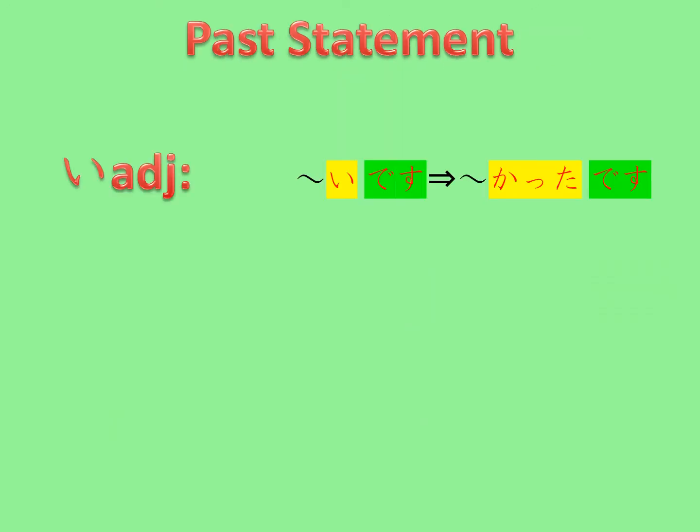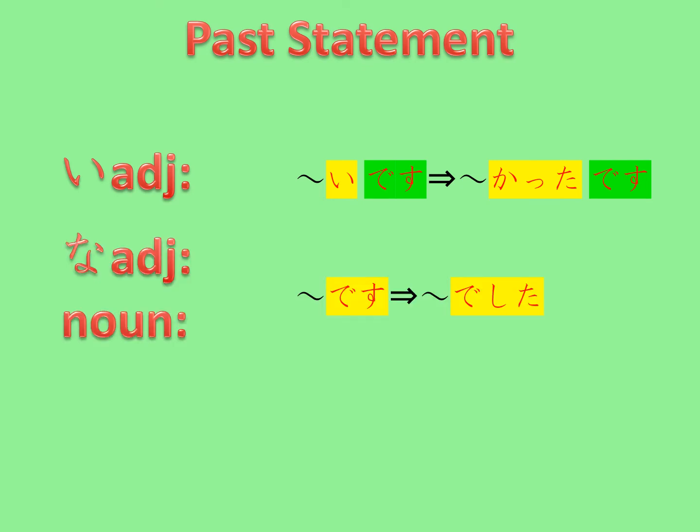Let's recap. If you want to make a sentence with desu into a past statement: with an i-adjective, you change the ending -i of the i-adjective to -katta, but leave desu as it is. If the sentence is with a na-adjective or a noun, change desu into deshita.